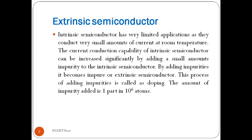Intrinsic semiconductors have very limited applications as they conduct a very small amount of current at room temperature. The current conduction capability of an intrinsic semiconductor can be increased significantly by adding a small amount of impurity — one part in 10 to the power of 6 atoms — making it an extrinsic semiconductor. This process of adding impurities is called doping.